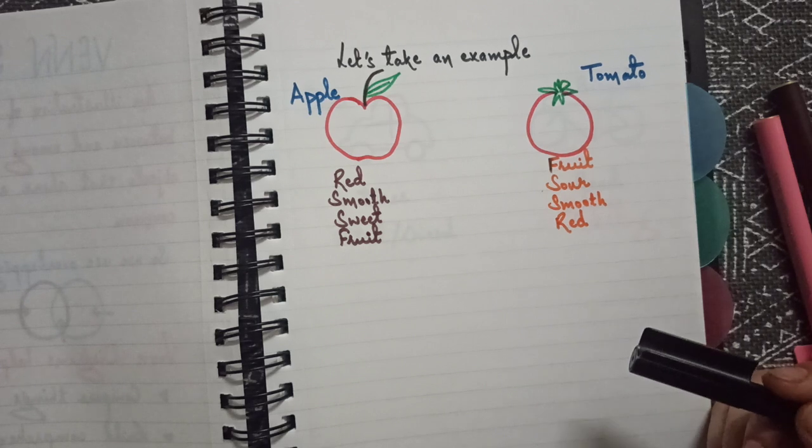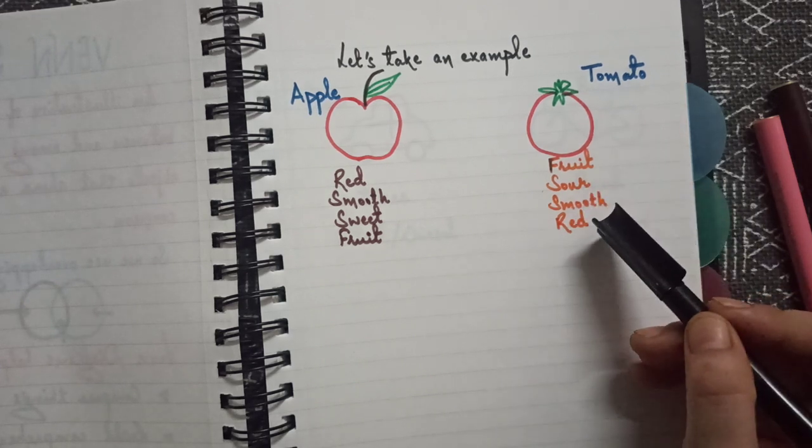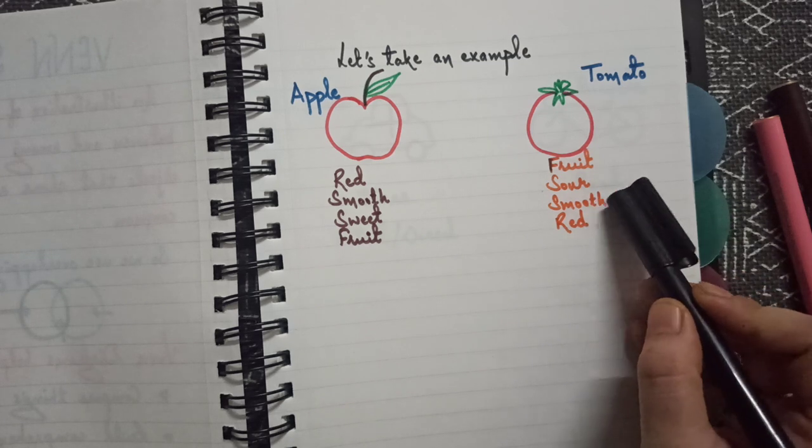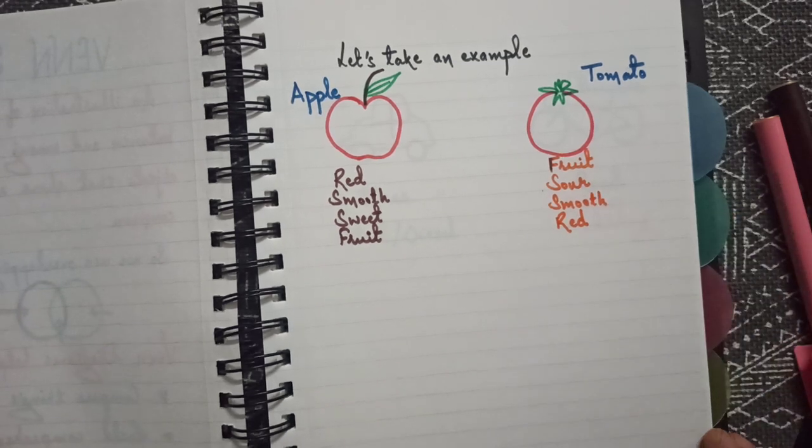What about tomato? It is also a fruit, it is sour, it is smooth. We can say sour, we can say tangy, it is smooth and it is also red in color.